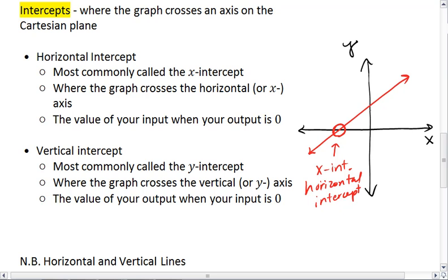We also have the point where the graph crosses the y-axis or your vertical axis. This is your y-intercept or your vertical intercept. This is the point where the input of zero corresponds with that particular output.